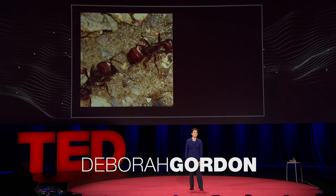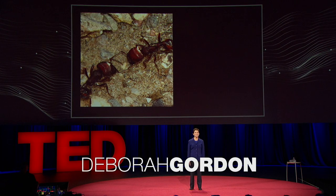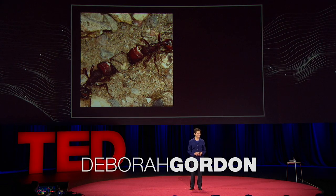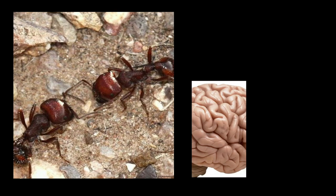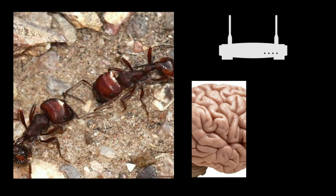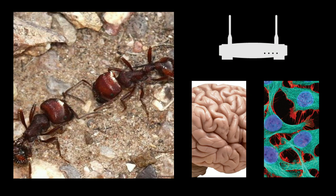I study ants in the desert, in the tropical forest, in my kitchen, and in the hills around Silicon Valley, where I live. I've recently realized that ants are using interactions differently in different environments, and that got me thinking that we could learn from this about other systems, like brains and data networks that we engineer, and even cancer.